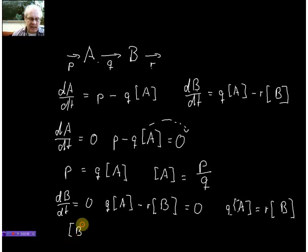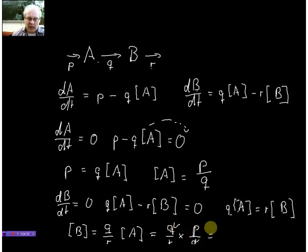So B in this case would be q over r times A. I just write it in a slightly different form and we just calculated what A is in this case. So we calculated A equals p over q. So I can put that simply in and I write q over r times, and instead of A, I write p over q. And since the q's cancel out, I get p over r.